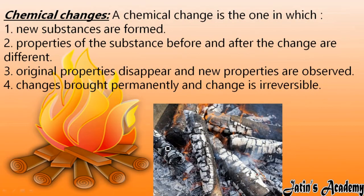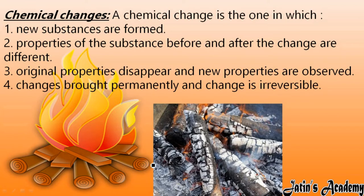Next we are having chemical changes. What are the properties of chemical change? First, new substances are formed. When you burn wood, after burning you will see that the wood converts into ash. All the chemical properties of the wood are also changed. Wood can bear too much weight, but now this ash is very light in weight and cannot bear that much weight.